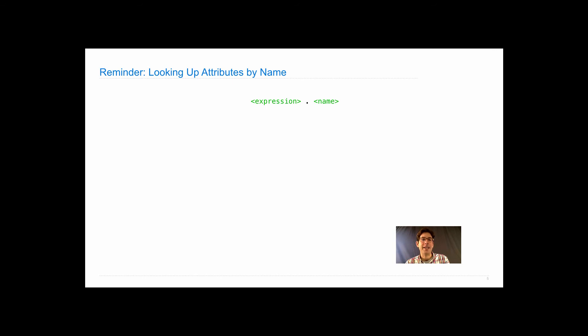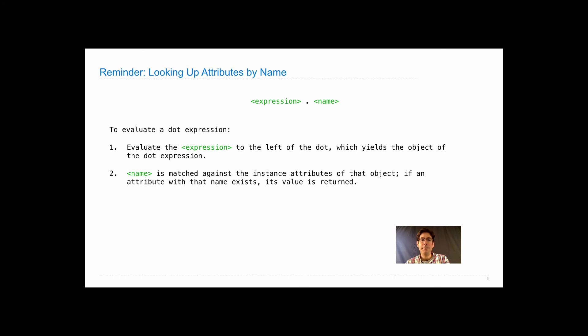Let's quickly review what happens when you evaluate a dot expression. You evaluate this by evaluating the expression on the left of the dot, which yields an object. Name is matched against the instance attributes. If an instance attribute exists with that name, its value is returned as the value of the whole dot expression.